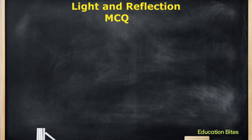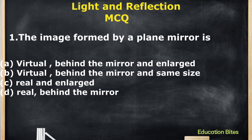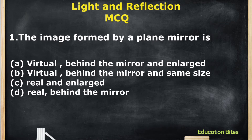The first question is: The image formed by a plane mirror is — A. Virtual, behind the mirror and enlarged. B. Virtual, behind the mirror and same size. C. Real and enlarged. D. Real, behind the mirror. The correct option is B: Virtual, behind the mirror and same size.